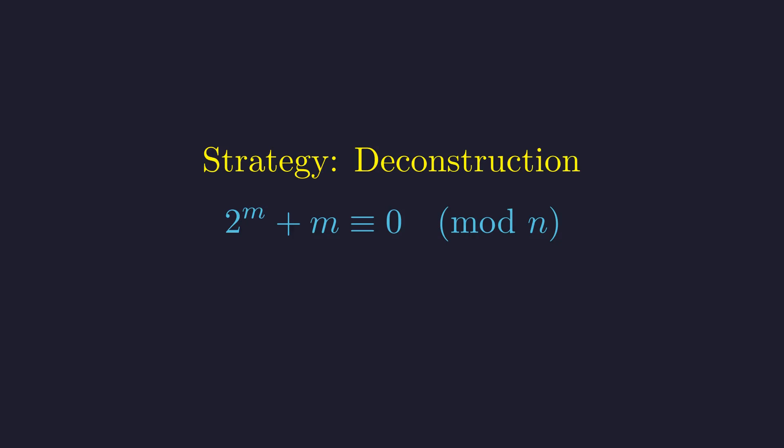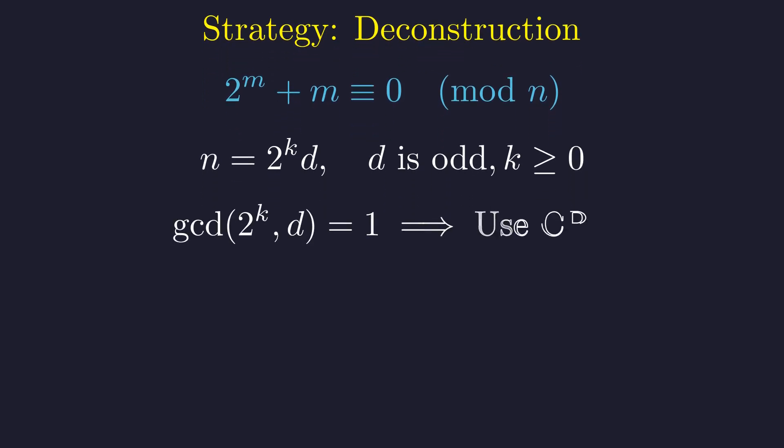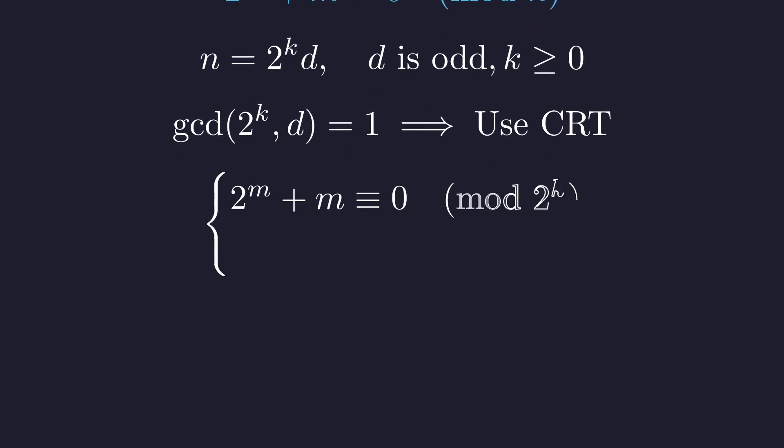A standard technique is to decompose into its power of 2 and odd parts. We write n as 2 to the power k times an odd number d. Since these parts are coprime, the Chinese remainder theorem allows us to split the problem into an equivalent system of congruences. We must find an m that satisfies both conditions simultaneously.